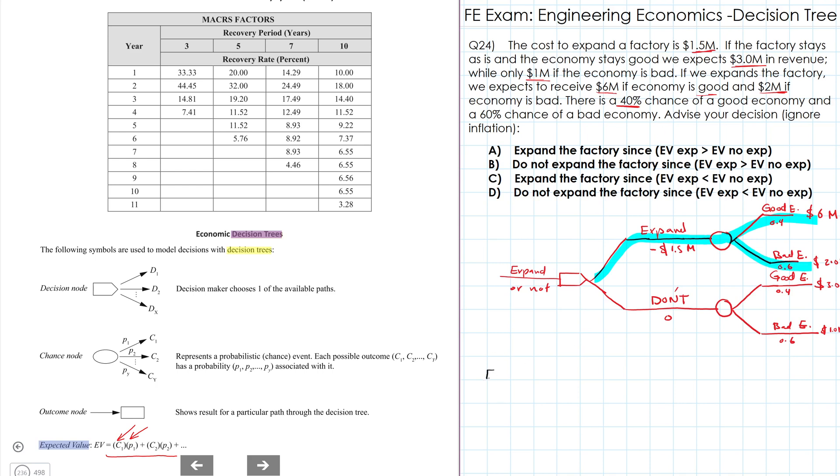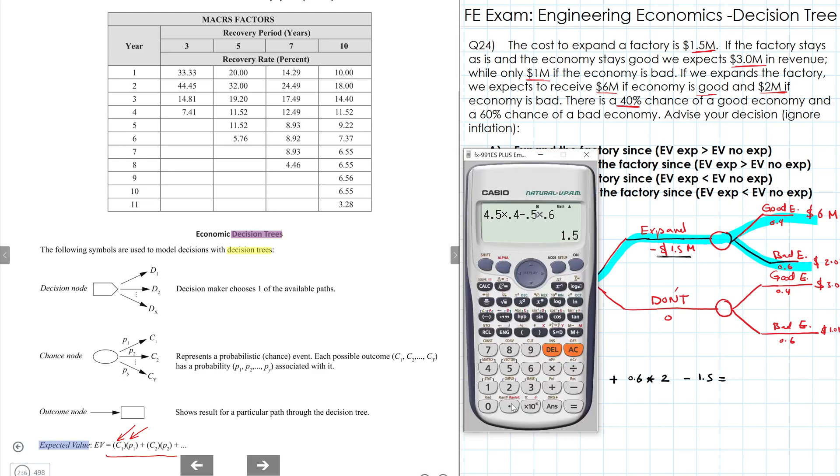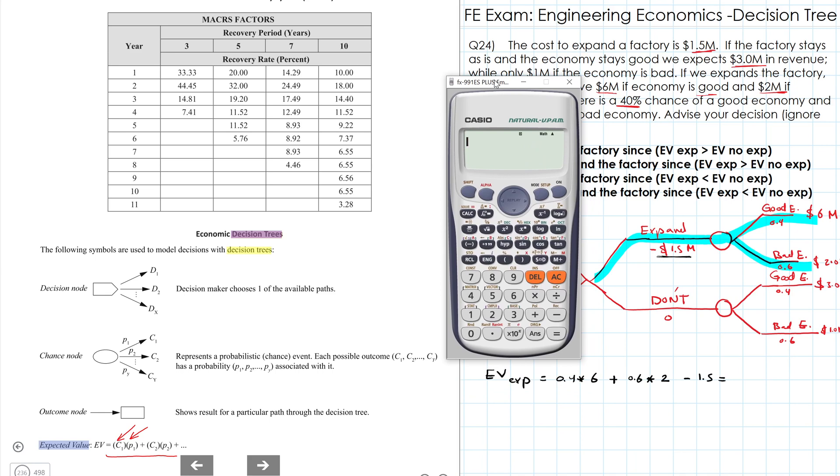So the expected value for expanding equals 40% multiplied by $6 million plus 60% multiplied by $2 million. And we have expenses which is $1.5 million for the expand itself. So it would be 0.4 times 6 plus 0.6 multiplied by 2 minus 1.5.